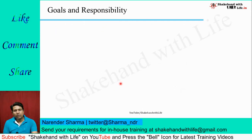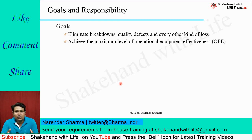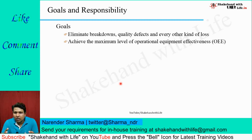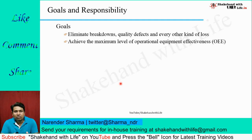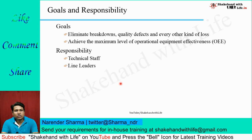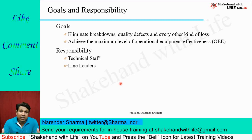The goals under focused improvement are to eliminate all breakdowns, quality defects, and every other kind of loss generating in the process or production system, and to achieve the maximum level of OEE — the minimum standard is 85%. The responsibilities can be shared by technical staff, maintenance people, line leaders, production engineers, operators, and maintenance engineers.